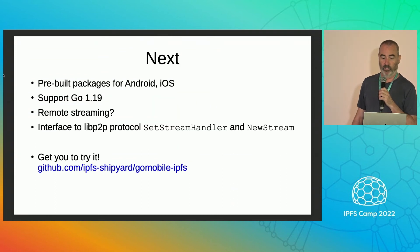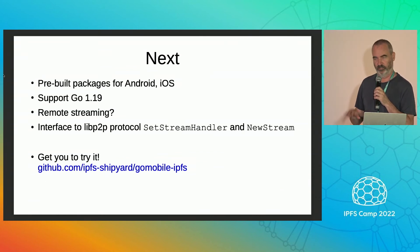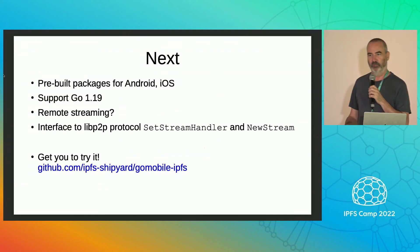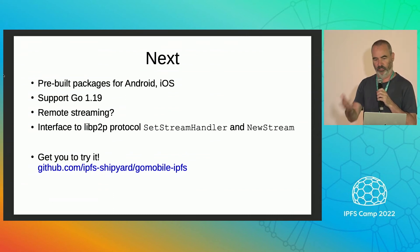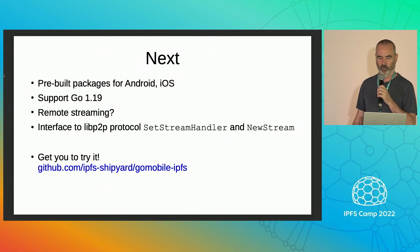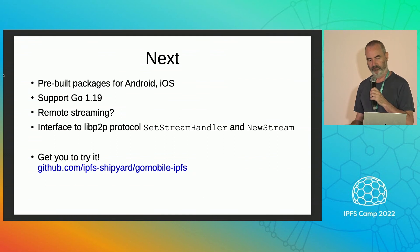What's next? We want to make pre-built packages for Android and iOS and distribute those through the usual channels, so you don't have to build it yourself. We want to support Go 1.19. Right now when you stream, you're still streaming from packets stored in the repo on the phone, but it would be nice to fetch from a remote IPFS node so you could stream a large video without burdening the storage on mobile. Finally, LibP2P has a cool protocol handler infrastructure, and we want to update Go Mobile IPFS to expose the set stream handler and new stream functions.